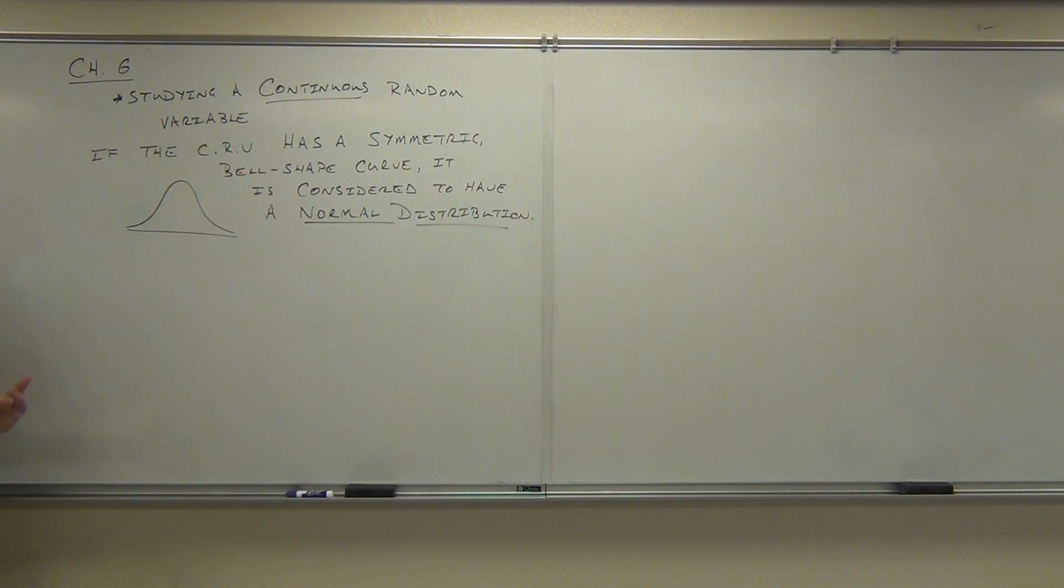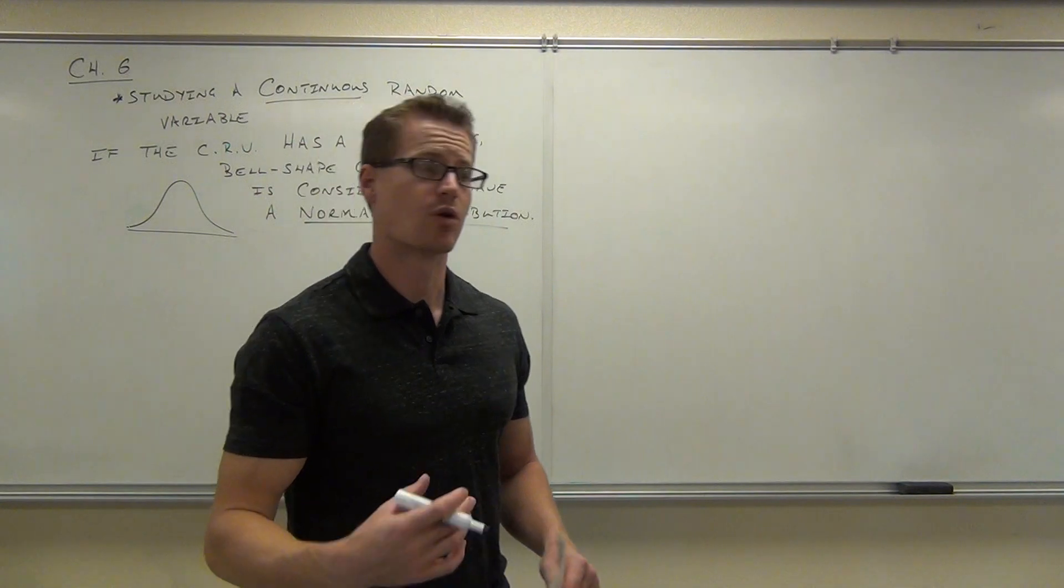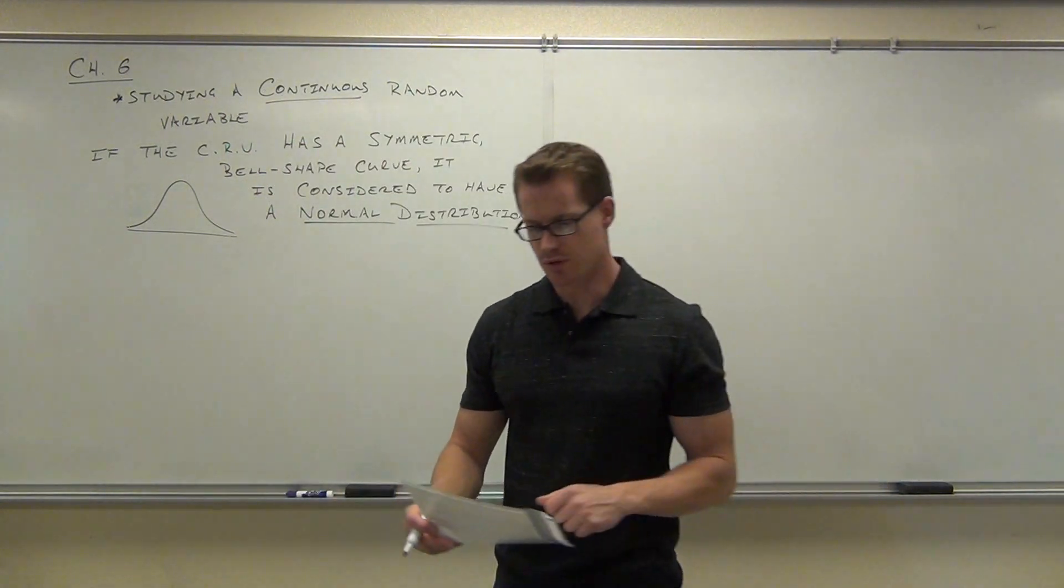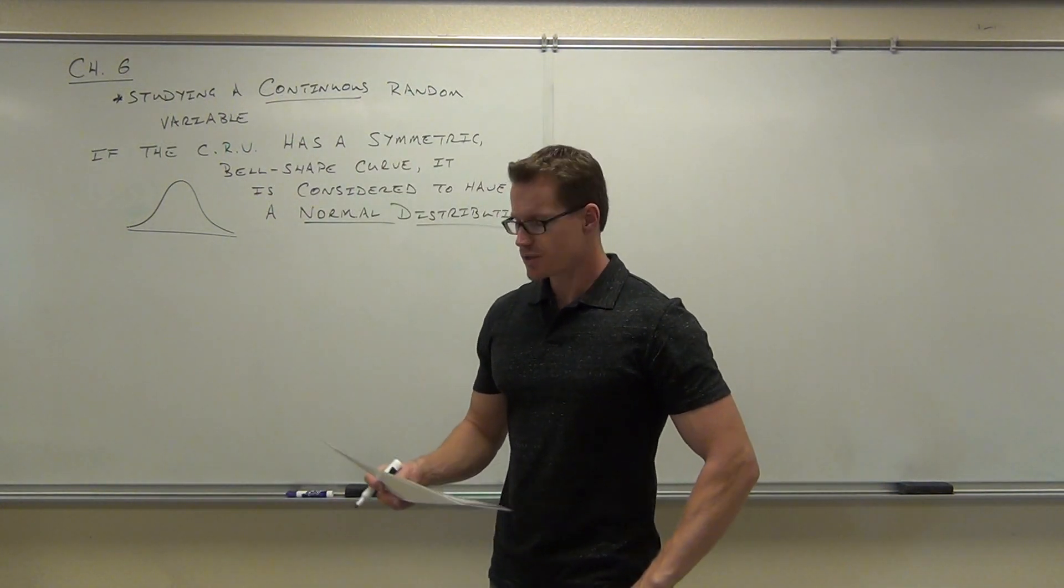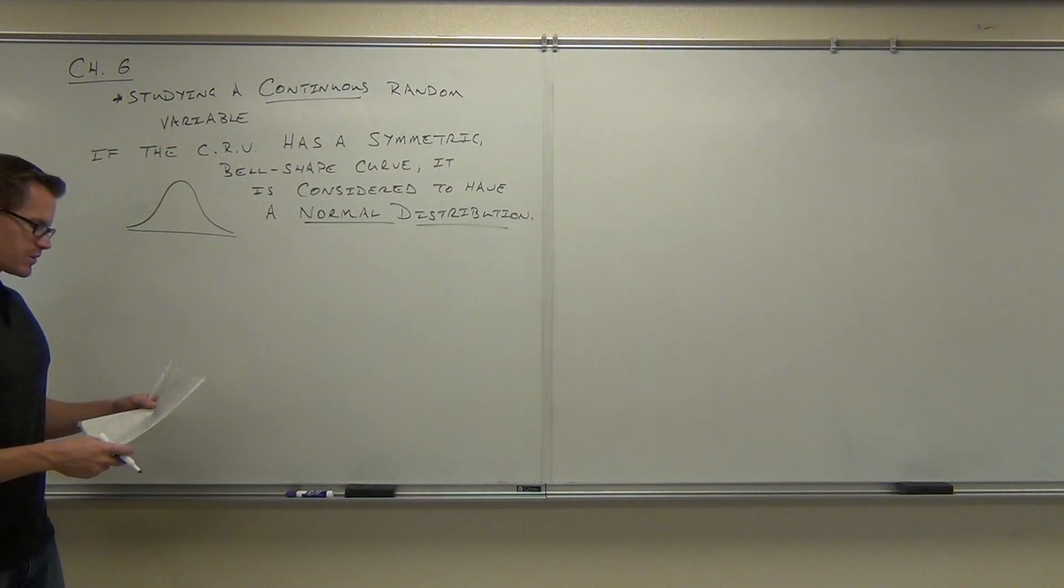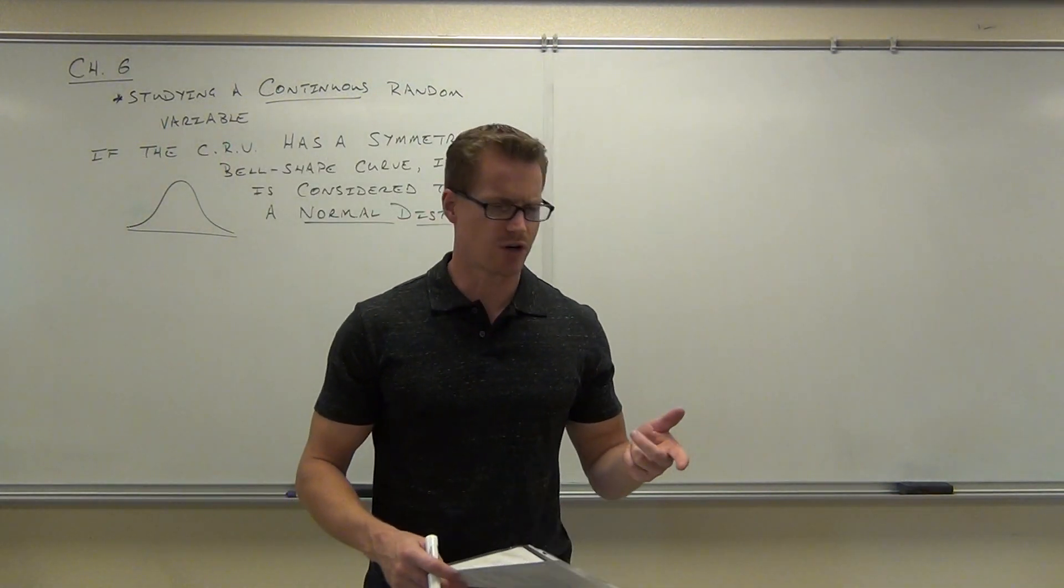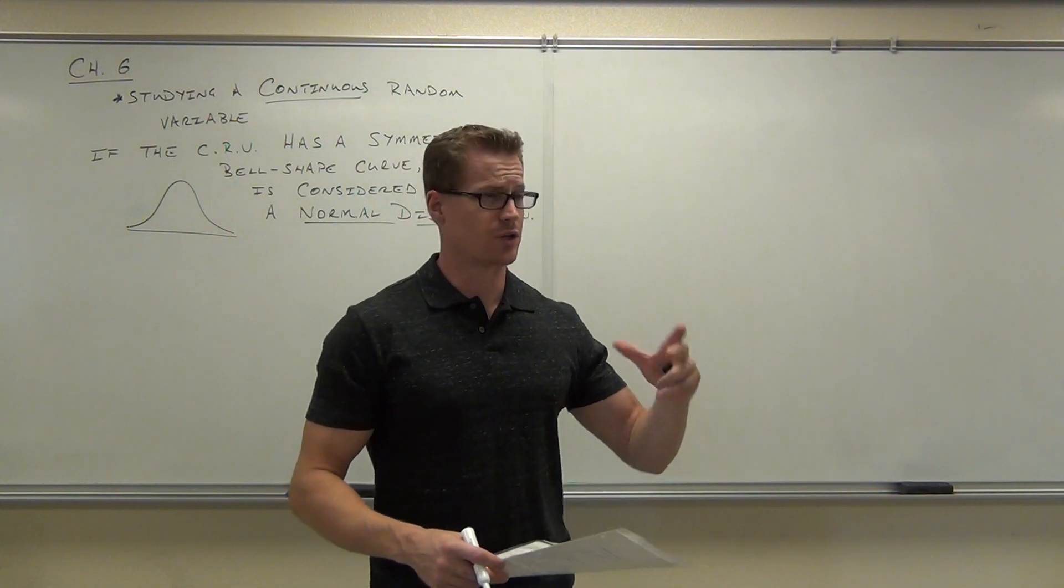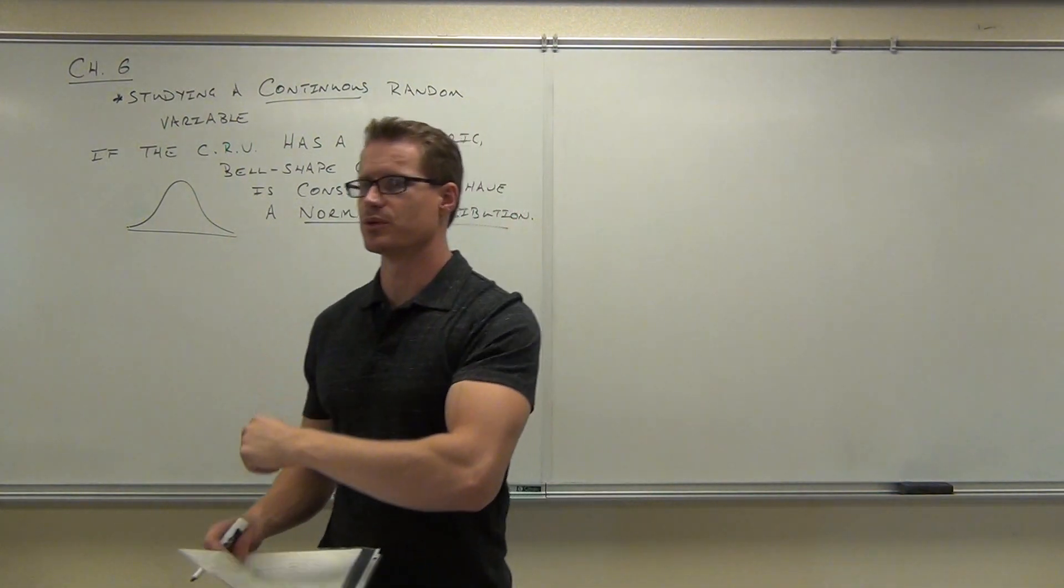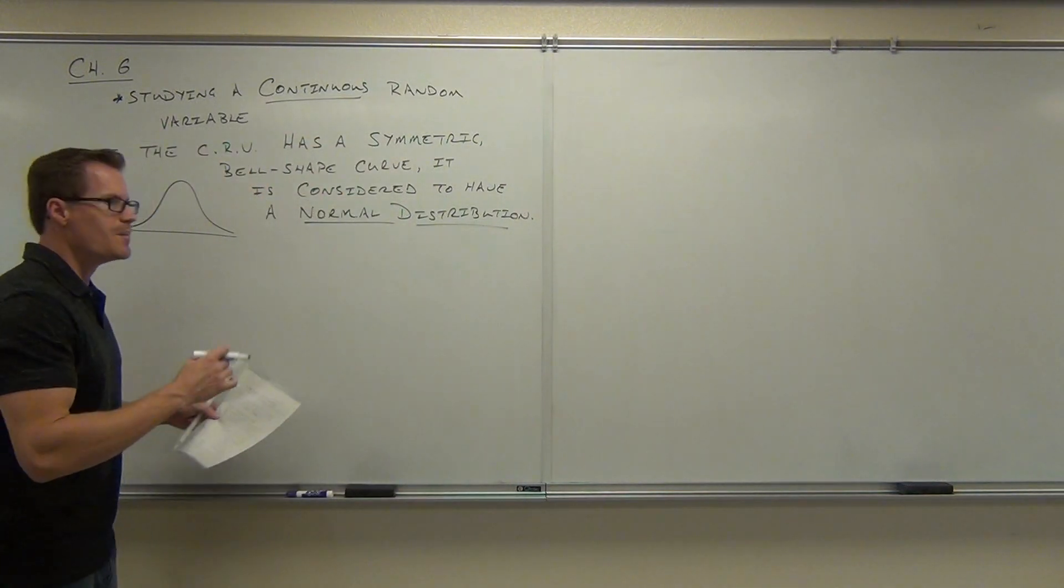Our continuous random variable has a symmetric bell-shaped curve. However, it's considered to have a normal distribution, or be normally distributed. And that's what we're looking to have happen. In section 6.2, what we're going to be looking at is something called the standard normal distribution. Now, I'm going to introduce this concept of a distribution with continuous random variables in just a little while, and I'll kind of build from what's called a uniform distribution to a standard normal distribution, so you can kind of see the differences and understand what we're going to be doing.